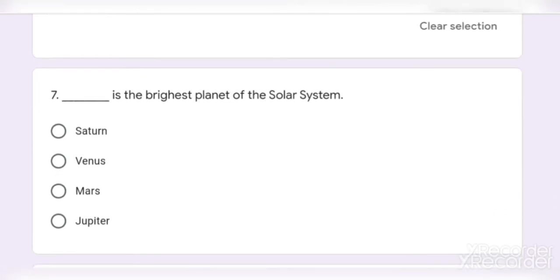Question number 7. Dash is the brightest planet of our solar system. Option 1: Saturn. Option 2: Venus. Option 3: Mars. And option 4: Jupiter. And the correct answer is Option 2, Venus.